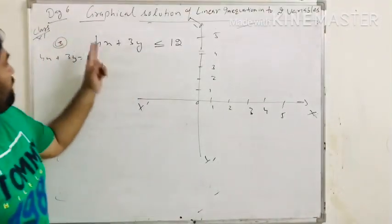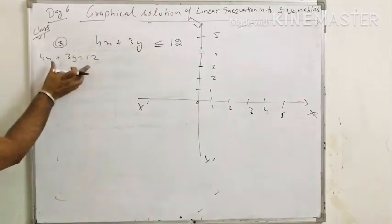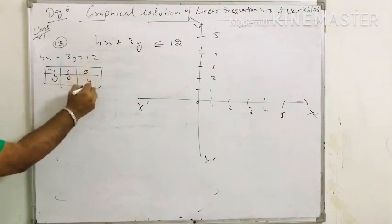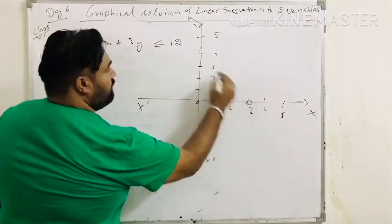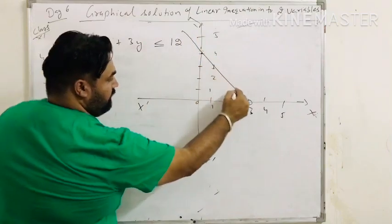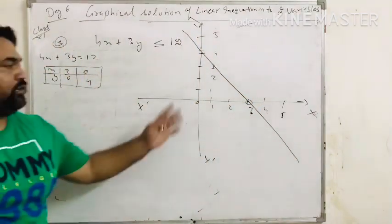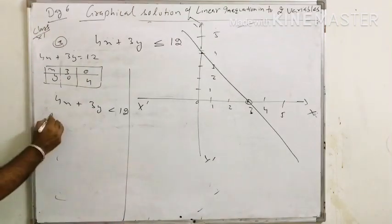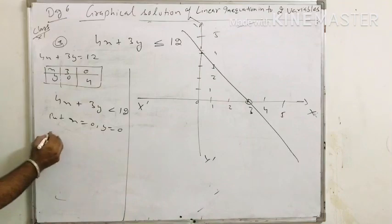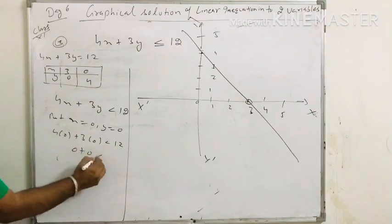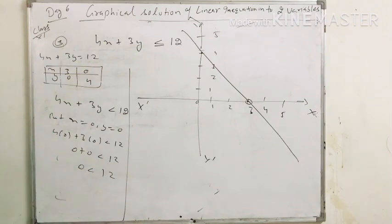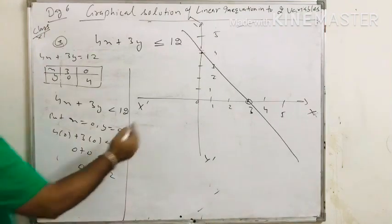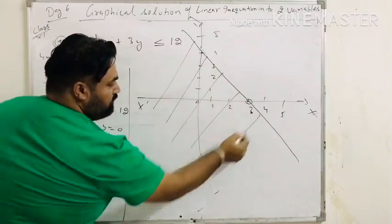The next question is 4x plus 3y less than or equal to 12. First of all, we find the solution of the equation 4x plus 3y equals to 12. The solutions are 3,0 and 0,4. Draw a line through these points. This line divides the xy plane into two halves. Now solving the inequality 4x plus 3y less than 12: put x equals to 0, y equals to 0. This gives 0 plus 0 less than 12, so 0 is less than 12. The point 0,0 satisfies this equation, so the graph region contains the origin.